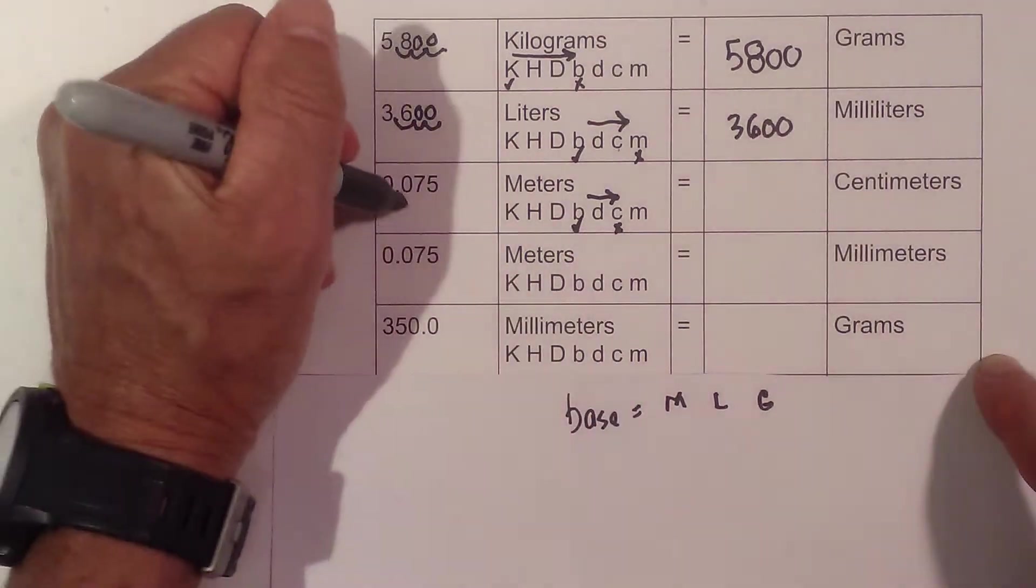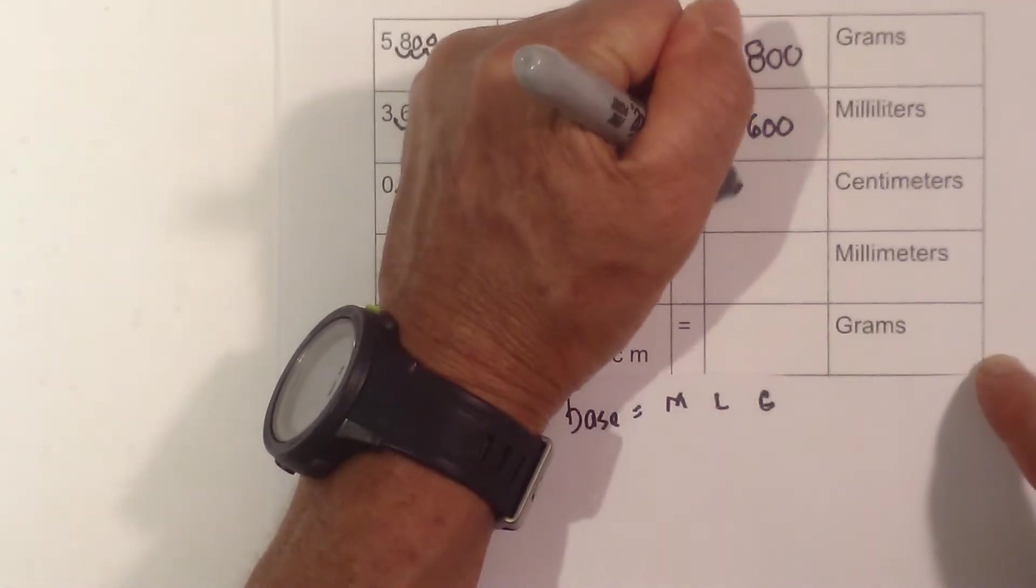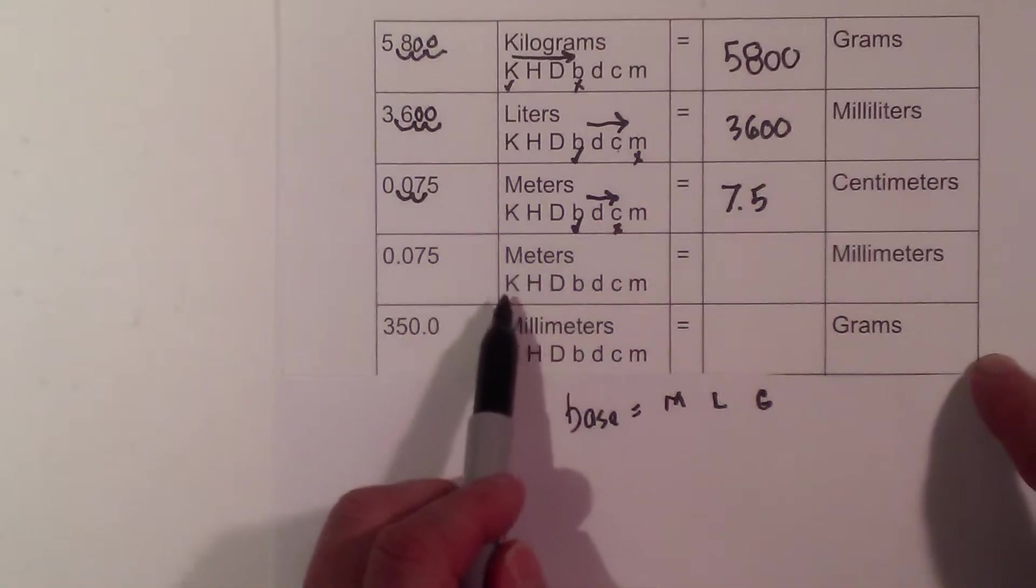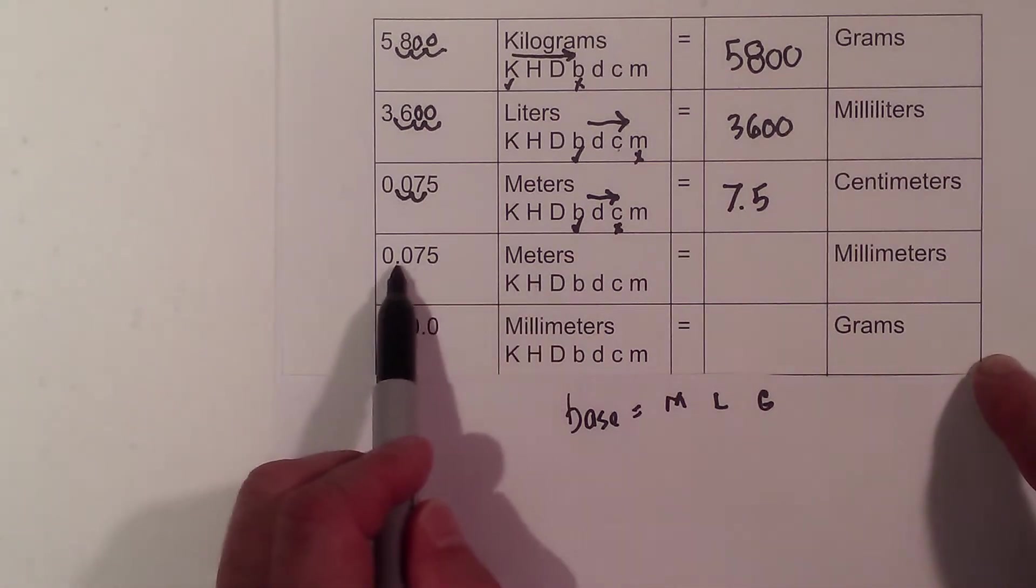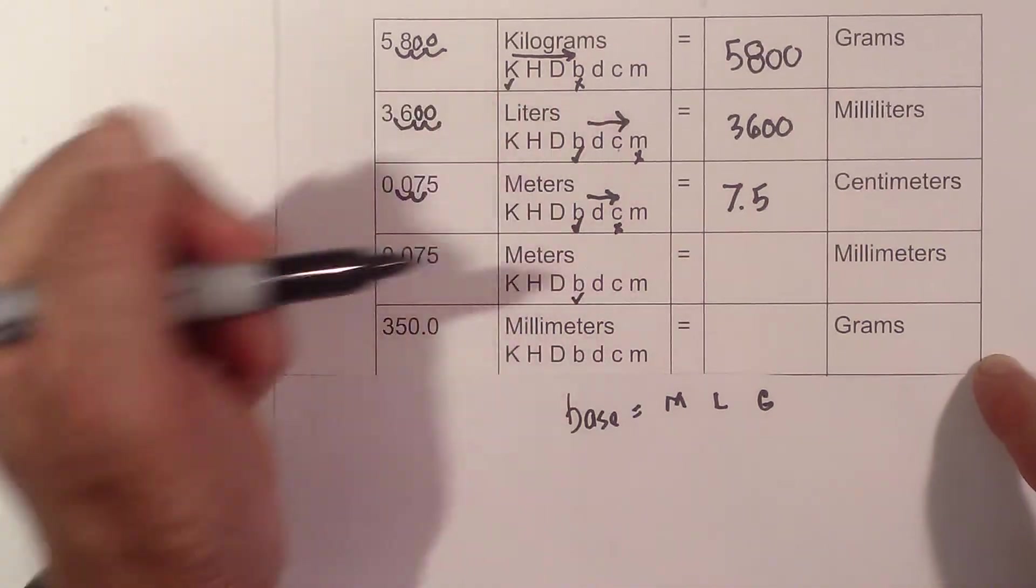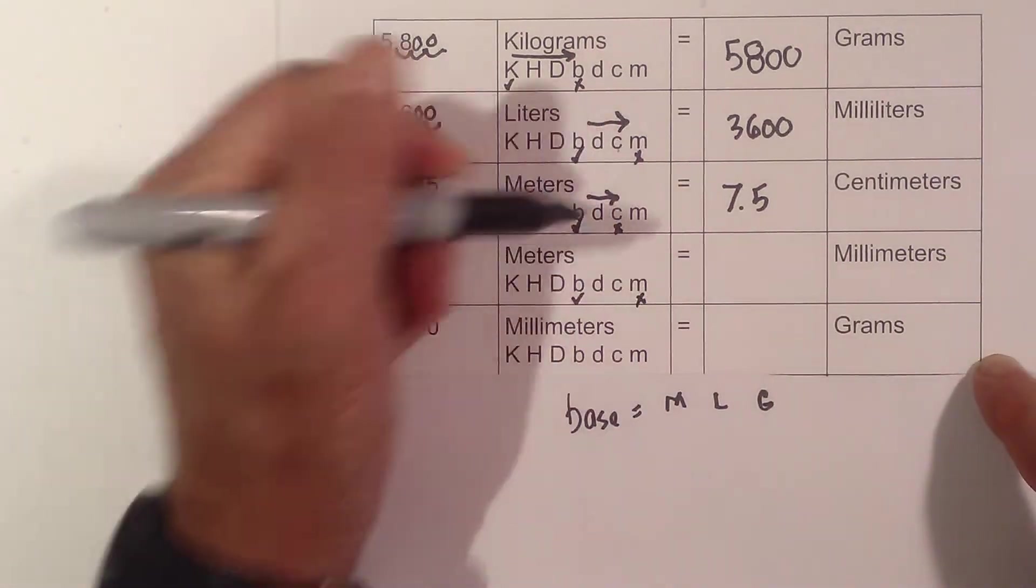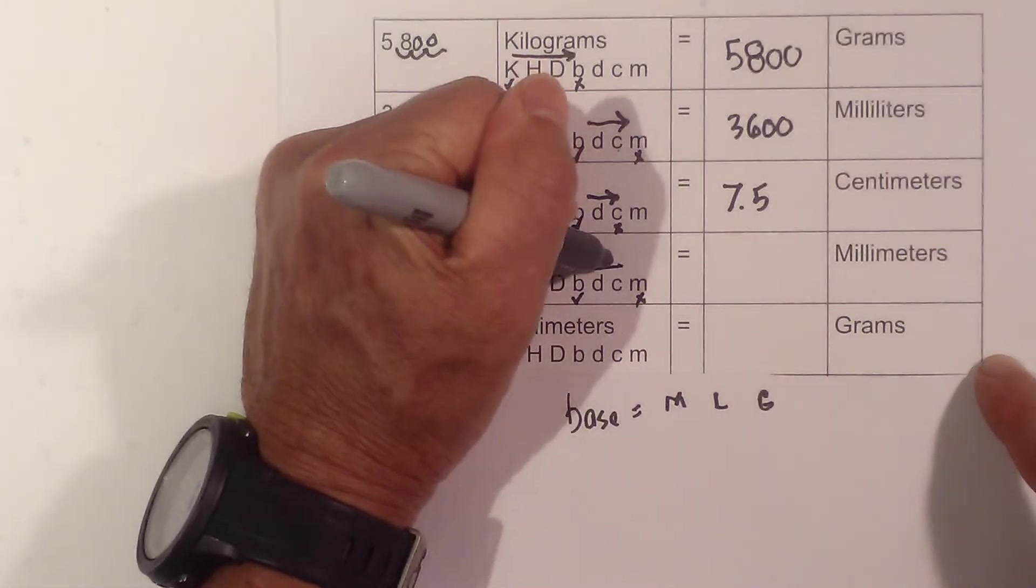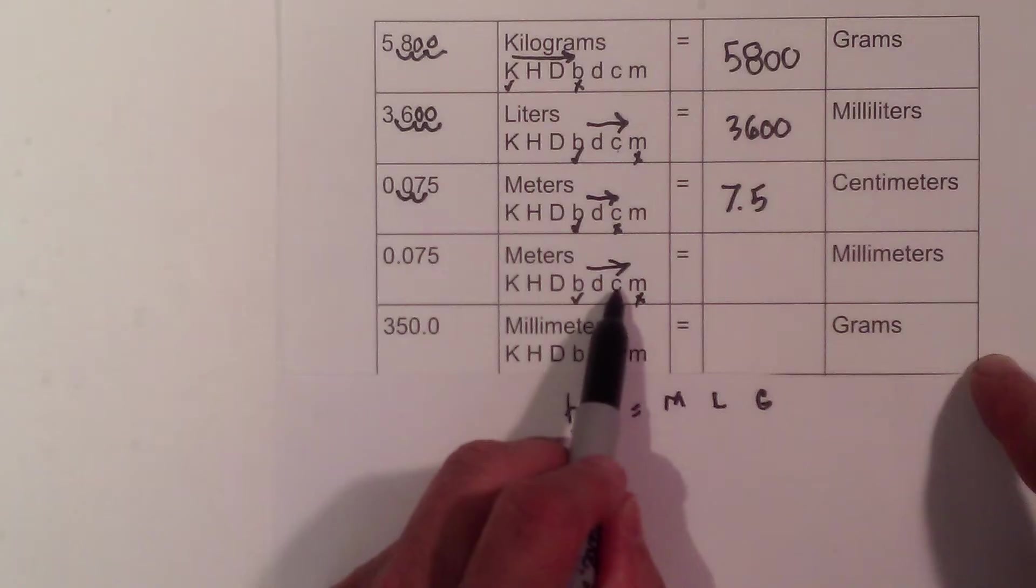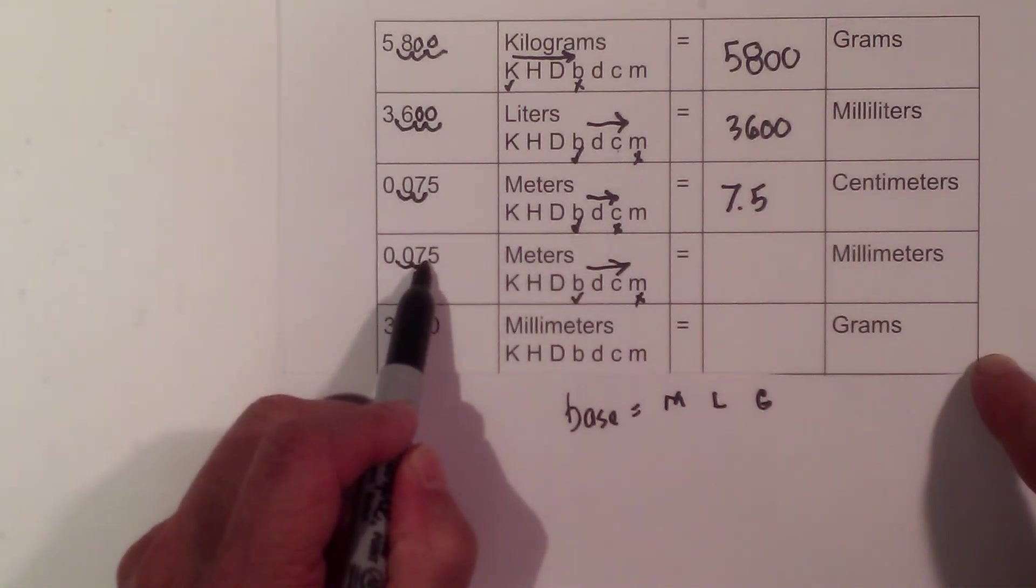The decimal is here—one, two. That becomes 7.5 centimeters. Now I'm at 0.075 meters. Same thing: put a check where I'm starting. This time I'm going to millimeters—put an X. I go from check to X, and I'm moving one, two, three times.